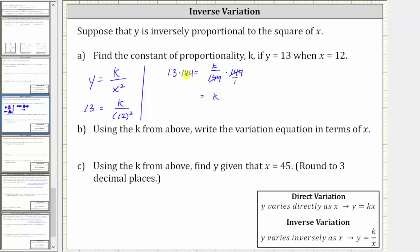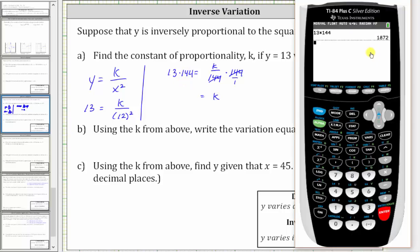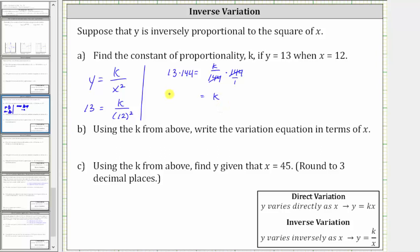On the left side, we have 13 times 144, which is equal to 1,872. So now we know k, the constant of proportionality is 1,872.